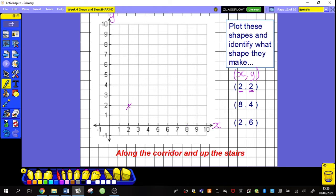On my X coordinate is 8, so I'm going to go along 8, so I'm going to go to here. And my Y coordinate is 4, so I'm going to go up 4. 1, 2, 3, 4. There. Finally, last one. I'm going to go along 2, along my X axis. And I'm going to go up 6. There we go.